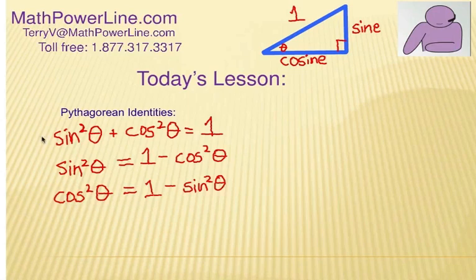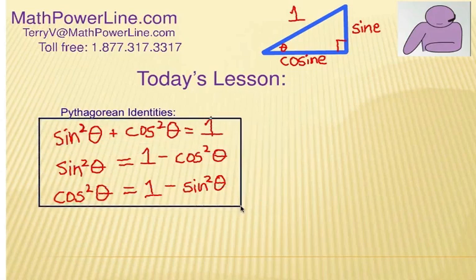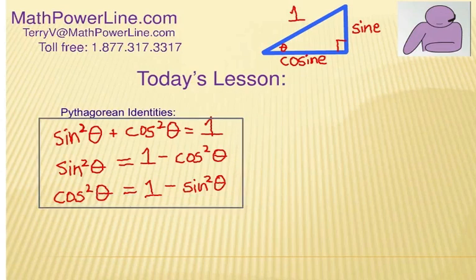Now, those are all three versions of the same Pythagorean identity when it comes to trig functions on the unit circle. I'm going to leave that there, and we'll refer back to it in a lot of other coming videos.